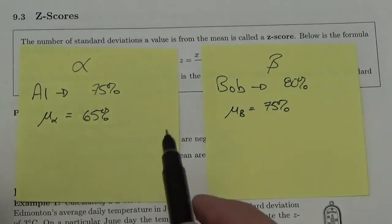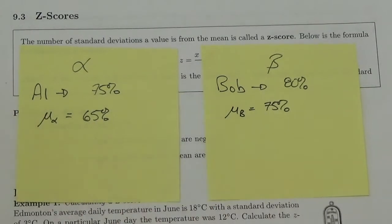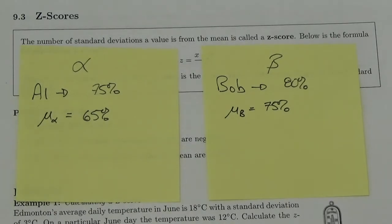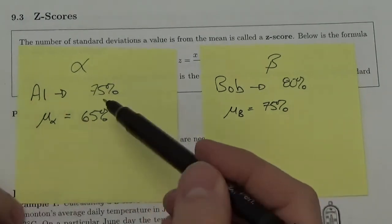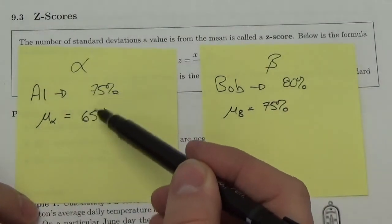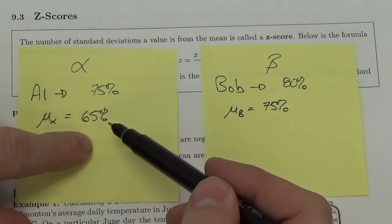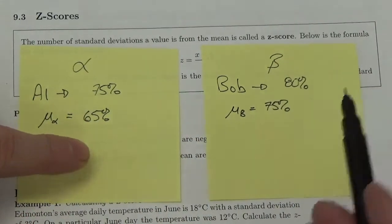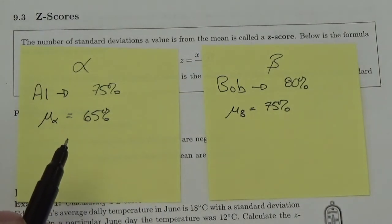Now it kind of looks like Al did better, because how you do depends on the group. When you're running a race, the winner is the one who comes in first out of the group — we compare that person to the group. Here, Al has a larger separation from the center of his group than Bob does from the center of his group. So now it looks like Al did better.